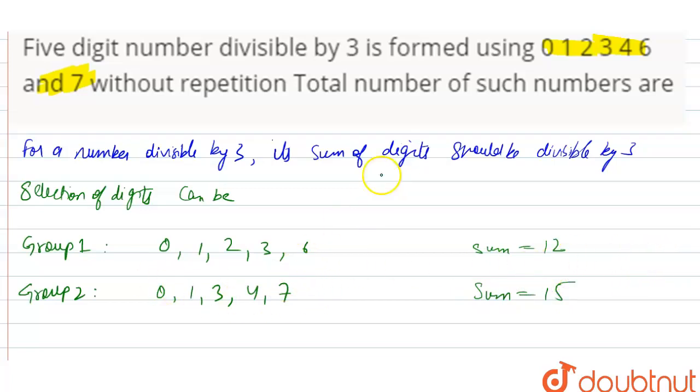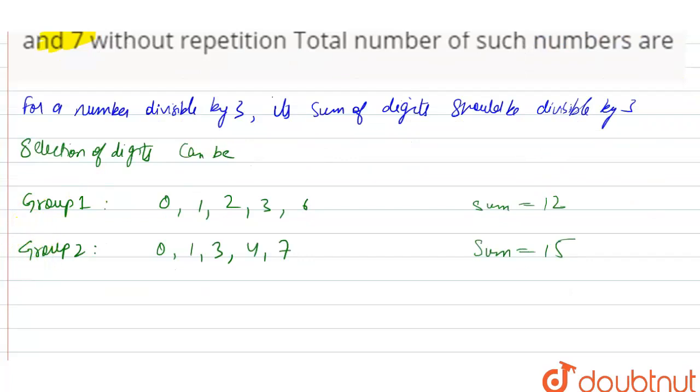So we have to select 5 digits from these numbers and add them up so that it should be divisible by 3. So now we will make group 3, we will make as many groups as possible. So group 3 will be, again we will check.